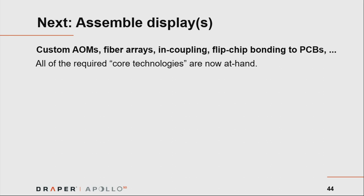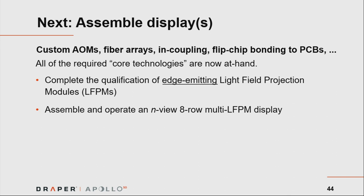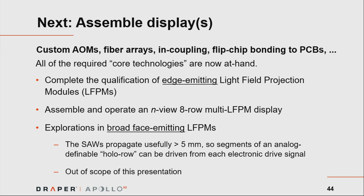The next step is to assemble displays. Now that we've developed custom acousto-optical modulators, custom tiny fiber arrays, custom in-coupling and flip-chip bonding methods, it's time to finish qualifying all of these and then replicate 20 to 30 of these modules during this calendar year to demonstrate a new, moving-parts-free three-dimensional display. We're also doing early explorations in a vast simplification of this architecture for applications at different scale factors, such as emitting from the system's broad face, a direction also explored by MIT and BYU.